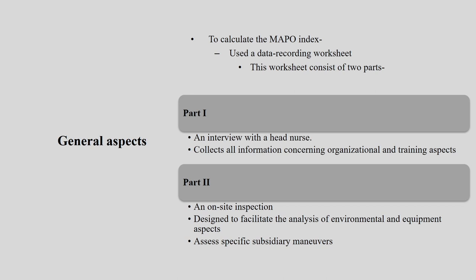To calculate the MAPO index, we need to use the data recording worksheet, which contains two major aspects: Part 1 and Part 2. Part 1 contains an interview with the head nurse and collects all information concerning the organizational and training aspects. The second part of the form has an on-site inspection, designed to facilitate the analysis of the environment and equipment aspects, and assess the specific subsidiary maneuvers.